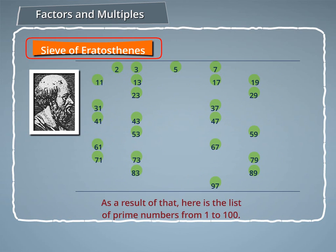As a result of that, here is the list of prime numbers from 1 to 100.